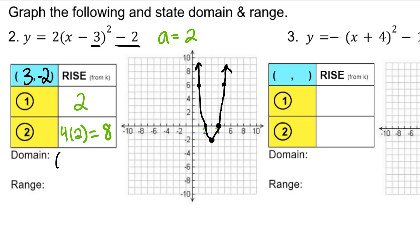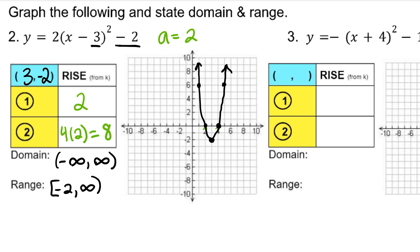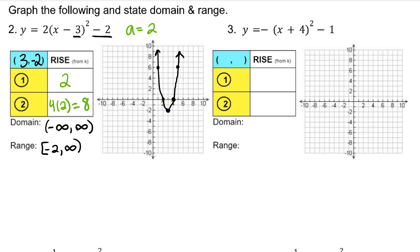The domain of every parabola is negative infinity to infinity, because you're allowed to square any real number. The y values below the vertex — negative 3, negative 4, negative 5, negative 6 — are not part of the range. We have a lowest y value, which is the y value of the vertex, negative 2, up to positive infinity.